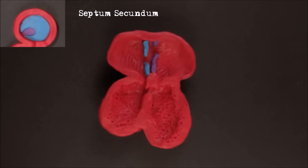During fetal life, these septa create a shunt for blood to flow from right to left atrium, so that it can bypass the lungs. This opening is called the foramen ovale.